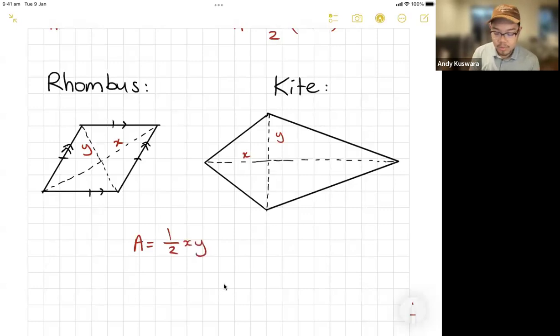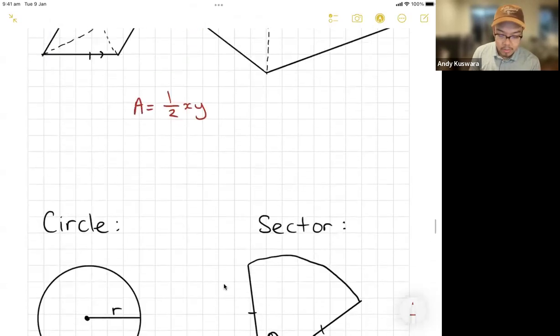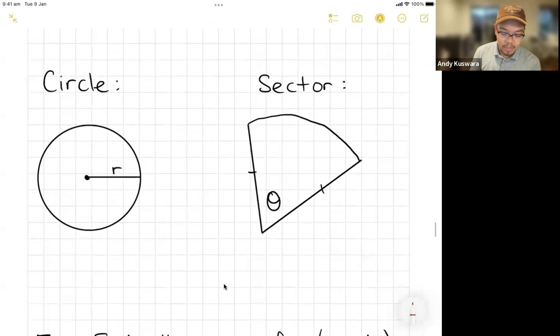And so the area of a kite or rhombus is half times x times y. Okay. Or half times your diagonals. And that there, almost there, here are your fancy ones.